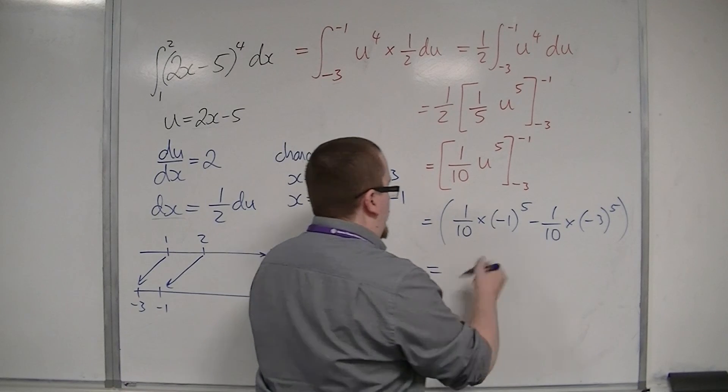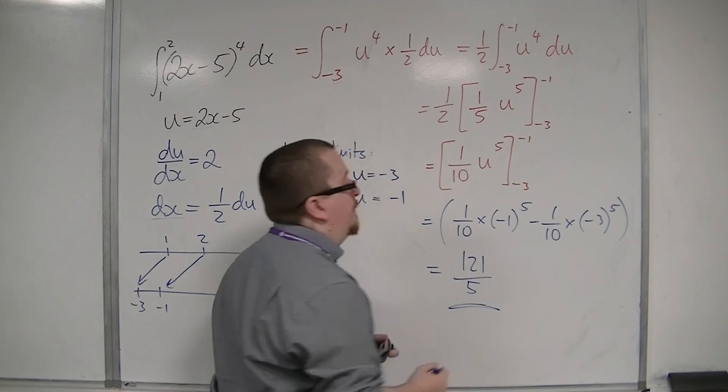Take away 1 tenth times by minus 3 to the power of 5. So, that's 121 over 5. And that is my final answer.